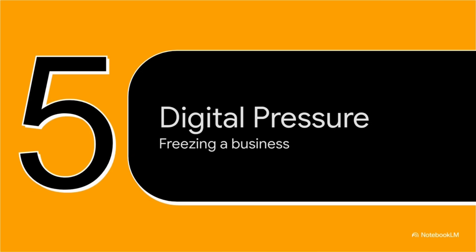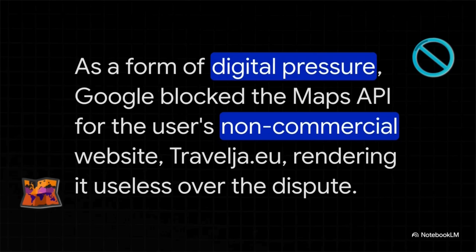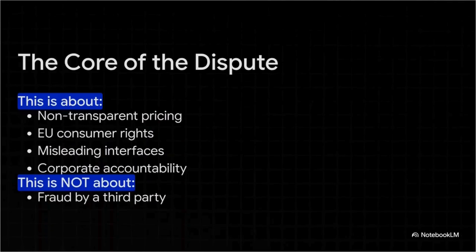Now we get to the fallout, and it's way worse than just a bill he has to fight. When Stanislav refused to pay a charge that was physically impossible, the company decided to apply some serious digital pressure. Google didn't just shut off the AI video tool — they shut down his entire billing account. The collateral damage was huge: it disabled the Google Maps API for his other website, a totally separate non-commercial hobby project called TravelJaw.eu. That site was now completely broken, basically held hostage over a billing dispute that had nothing to do with it. This bill for nearly 3,400 PLN was for an unemployed guy whose total monthly income was less than 1,500 PLN — meaning this one single bogus bill was worth more than two entire months of his income.